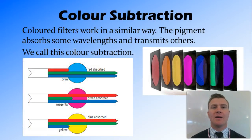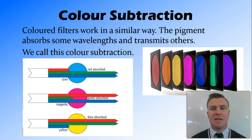This is where colour subtraction comes in. Coloured filters and paints work in a similar way. So what happens is the pigment in these filters absorbs some wavelengths while transmitting others. For example, a cyan filter will absorb red and transmit green and blue. A magenta will absorb green and transmit red and blue, and a yellow filter will absorb blue and transmit red and green.